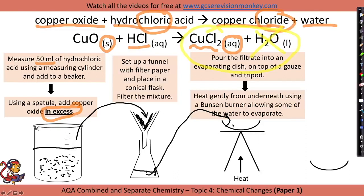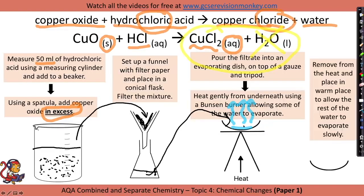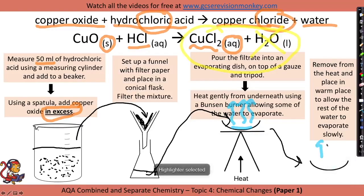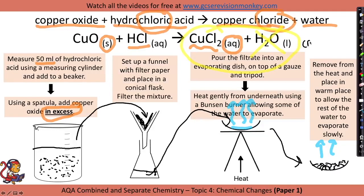Some of the water will evaporate on heating, but what you don't want to do is let all of the water evaporate so it actually goes dry. You want to have a little bit of water left in the evaporating dish. So the final step is to remove the evaporating dish from the heat and place it somewhere warm for the rest of the water to evaporate, leaving just the salt crystals behind. If you didn't leave it to evaporate slowly at the end, you wouldn't get the crystals forming. In your method you can describe this part of the process as crystallisation.